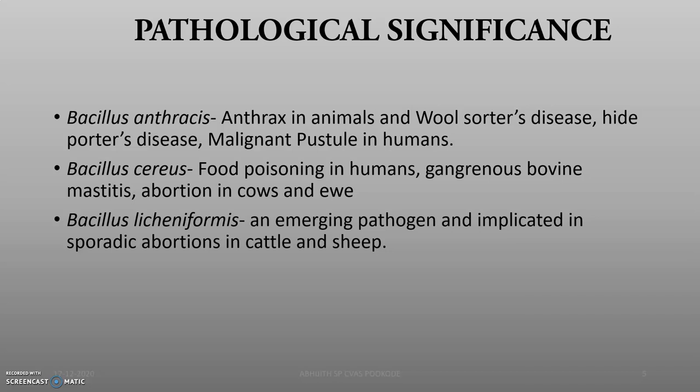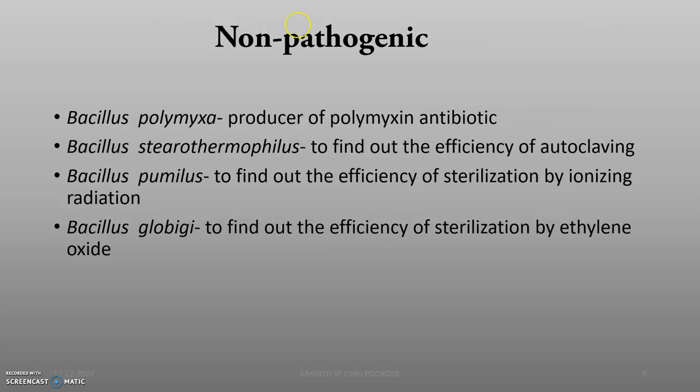In the case of Bacillus cereus, it causes food poisoning in humans, gangrenous bovine mastitis, and abortion in cows and ewes. Bacillus licheniformis is an emerging pathogen implicated in sporadic abortion in cattle. Moving to the non-pathogenic species: Bacillus polymyxa, stearothermophilus, pumilus, and globigii.